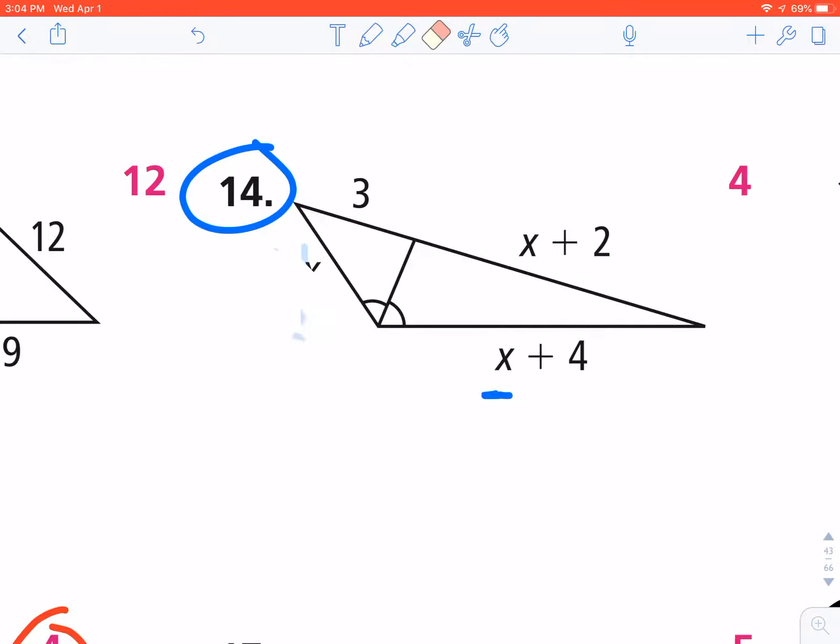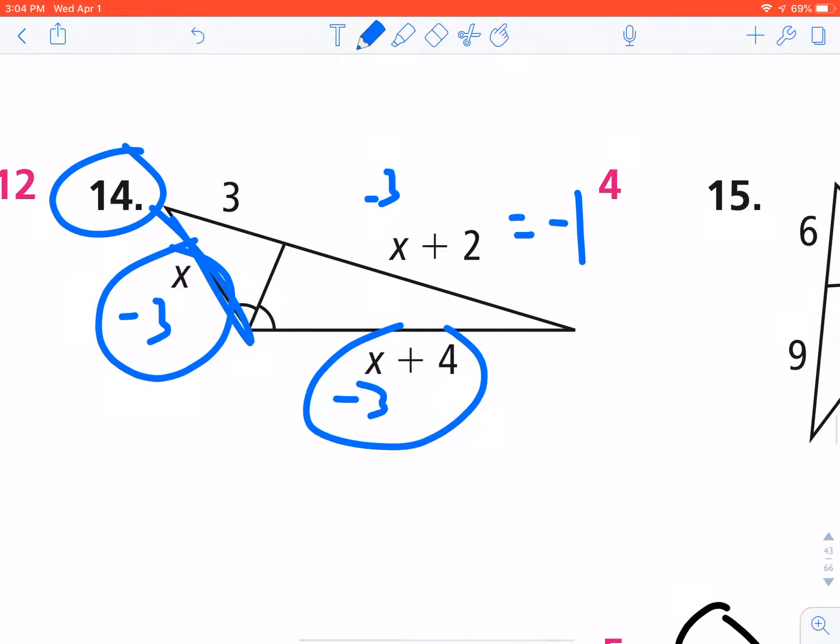If I took that negative 3 and I plug negative 3 in for x, we'd be okay here, we would not be okay here. That would give me negative 1, and I would not be okay here because that would tell me that this length is negative 3. That's not possible, so negative 3 is not a solution to this, only 4 is.